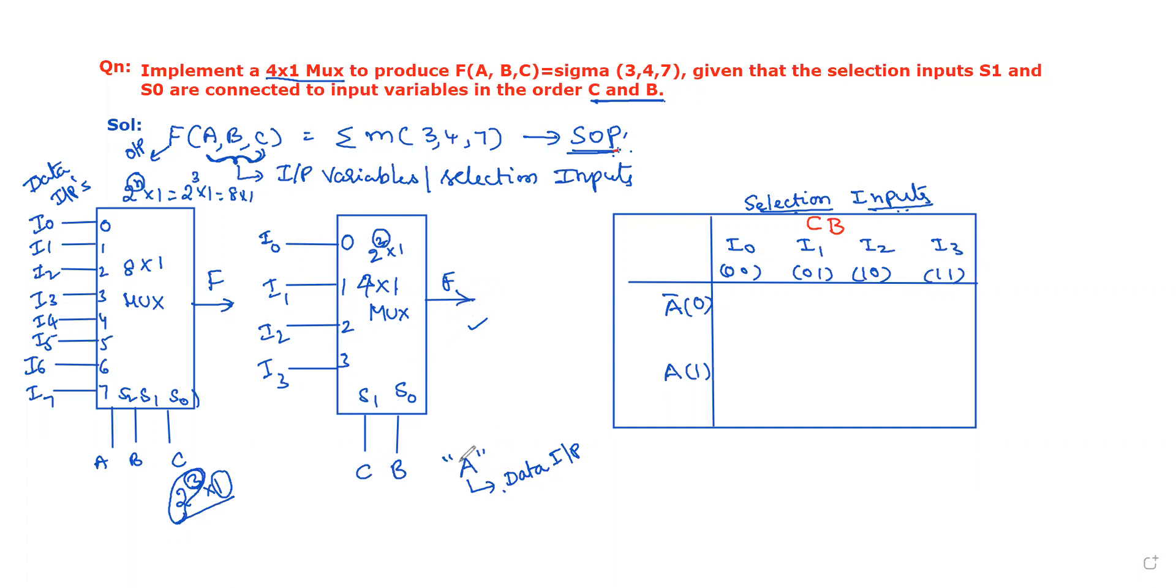Here A is missing. This missing variable we have to consider as a data input for this 4 by 1 multiplexer. We have to find the data input values I0 to I3 in terms of the missing variable A.